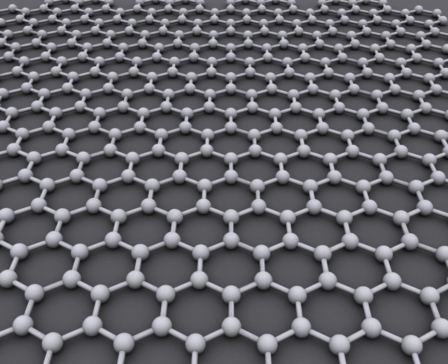Graphene can be considered an infinite-alternant, only six-member carbon ring polycyclic aromatic hydrocarbon. The International Union of Pure and Applied Chemistry notes: "...previously, descriptions such as graphite layers, carbon layers, or carbon sheets have been used for the term graphene... it is incorrect to use for a single layer a term which includes the term graphite, which would imply a three-dimensional structure. The term graphene should be used only when the reactions, structural relations or other properties of individual layers are discussed."